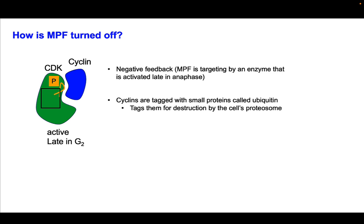How is MPF turned off? It's turned off by negative feedback. MPF is targeted by an enzyme activated late in anaphase. This enzyme tags the cyclin subunits with small proteins called ubiquitin, targeting them for destruction by the cell's proteasome — essentially the cell's trash compactor, which chews everything up and spits out the pieces. That's how MPF is turned off.